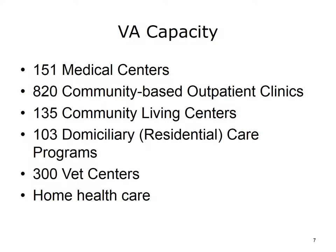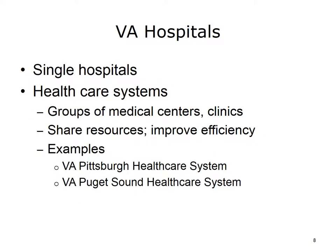The numbers on this slide speak to the size and importance of the VA system. Nationwide, it has 151 medical centers, 820 community-based outpatient clinics, 135 community living centers, 103 residential habilitation centers, 300 vet centers, and 139 integrated disability evaluation system sites. Some VA services are also provided in patient homes. The most obvious facilities are VA hospitals. Many areas of the country have veterans' health care systems, which are groups of affiliated medical centers and clinics that share resources to provide comprehensive care more efficiently. Two examples are the VA Pittsburgh Health Care System in Pennsylvania and the VA Puget Sound Health Care System in Washington State.